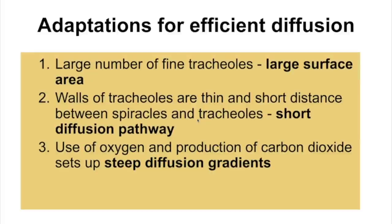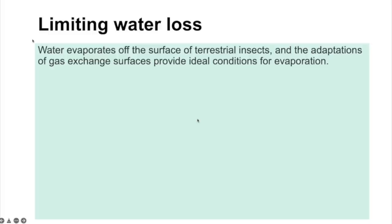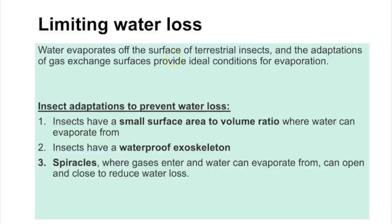Insects also need to limit water loss at gas exchange surfaces, as these surfaces are ideal for evaporation. Water loss is reduced because the gas exchange surface area (just the spiracles and tracheal system) is very small relative to the whole insect. The rest of the insect has a waterproof exoskeleton, and the spiracles can open and close — like stomata on a plant — to reduce water loss.